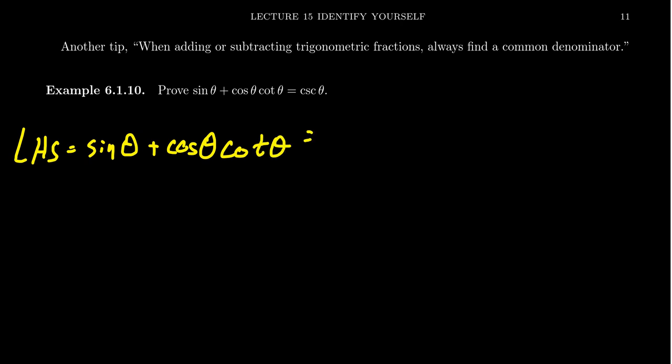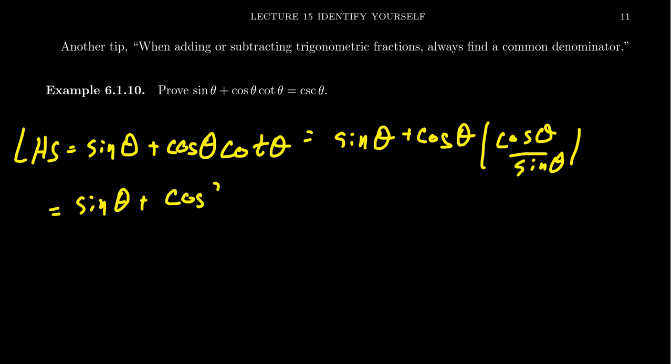So not sure what to do. I might use one of my previous tips of writing everything in terms of sine and cosine. Sine, of course, is already in that regard, so is cosine. But cotangent I can write as cosine over sine, for which when you multiply together the cosine with the fraction there, you're going to end up with sine theta plus cosine squared over sine.